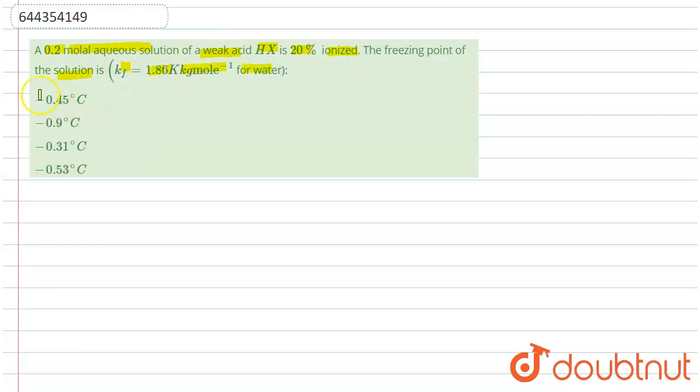We have to find the value of the freezing point. It is given that alpha is 20%, or 0.2—not percent, because I have calculated the value.